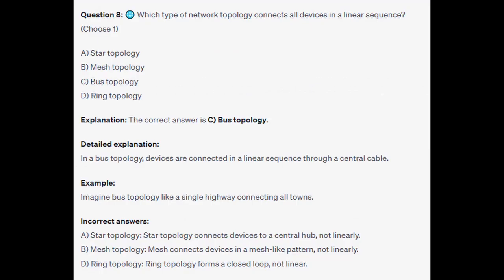The correct answer is C: Bus topology. In a bus topology, devices are connected in a linear sequence through a central cable. Imagine bus topology like a single highway connecting all towns. Star topology connects devices to a central hub, not linearly. Mesh connects devices in a mesh-like pattern, not linearly. And ring topology forms a closed loop, not linearly.